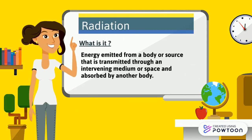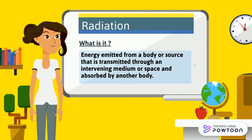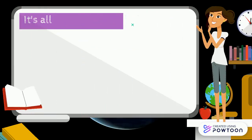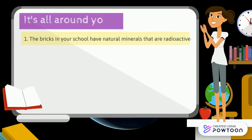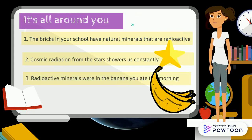What is radiation? Radiation is energy emitted from a body or source that is transmitted through an intervening medium or space and absorbed by another body. You are always surrounded by radiation — it's everywhere, even in the banana you ate this morning.